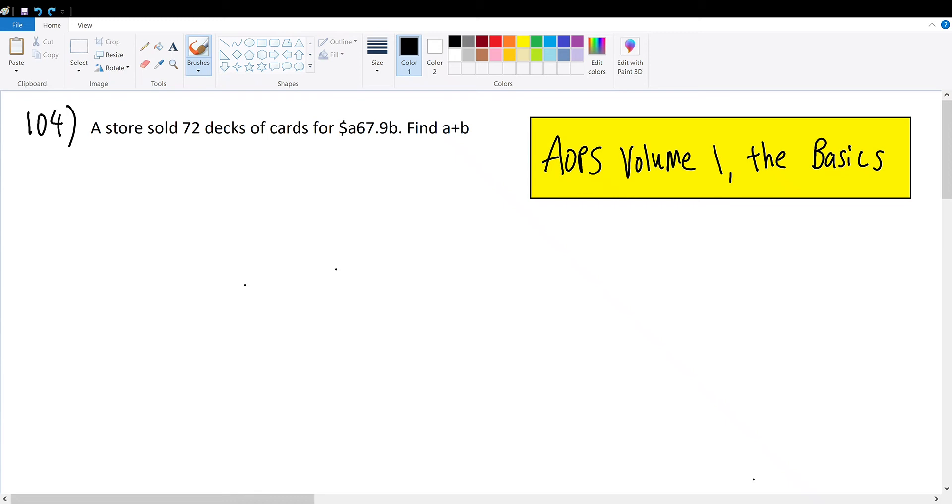AOPS Volume 1, The Basics, Number 104. A store sold 72 decks of cards for $A67.9B dollars, find A plus B.